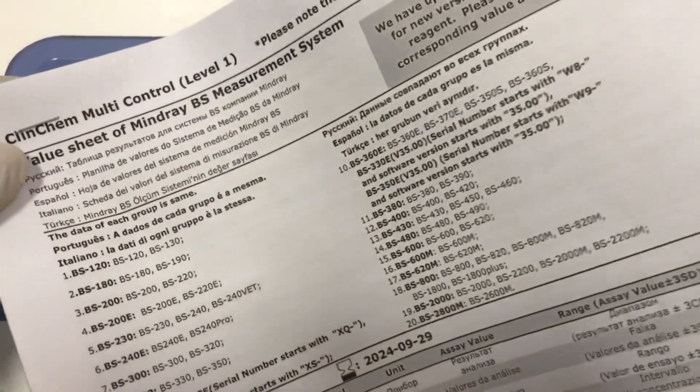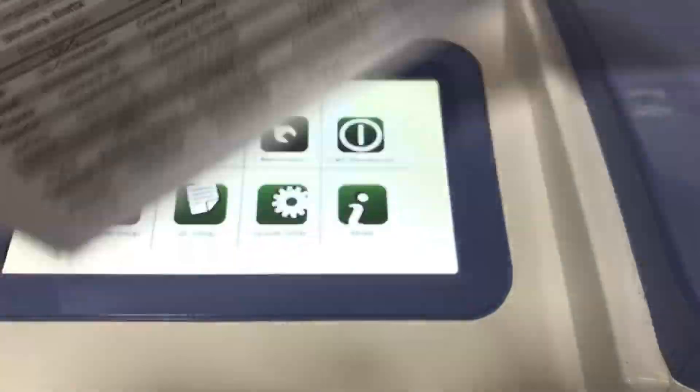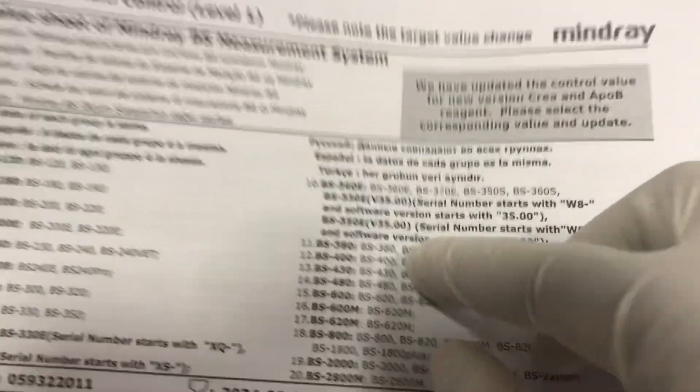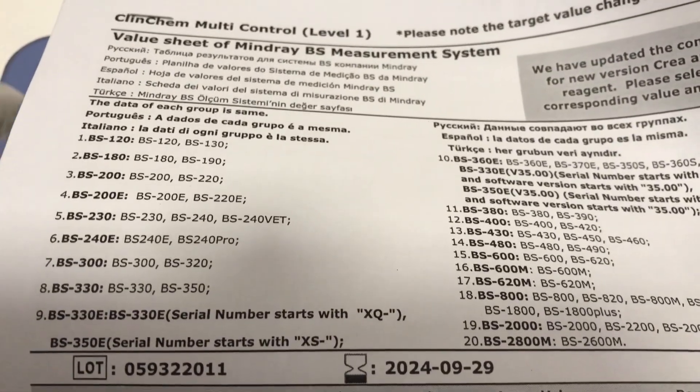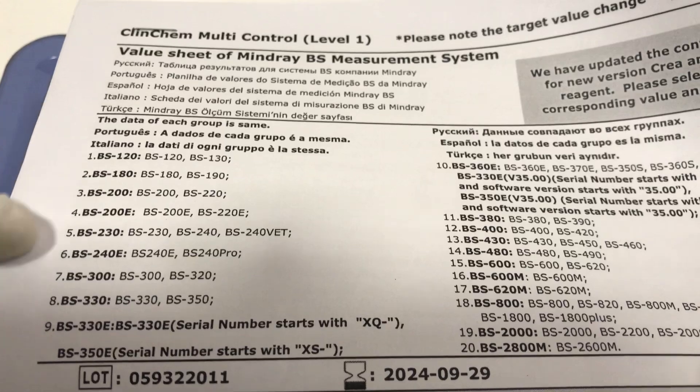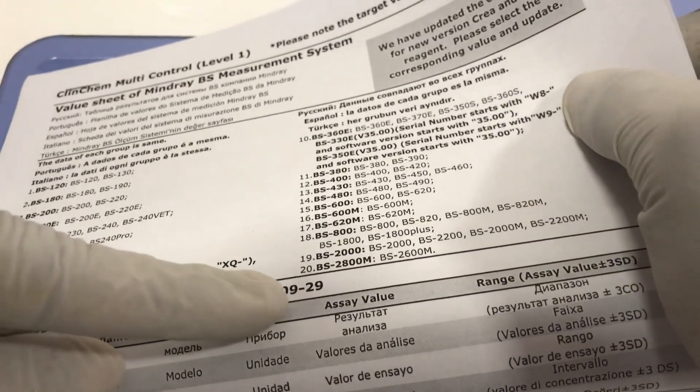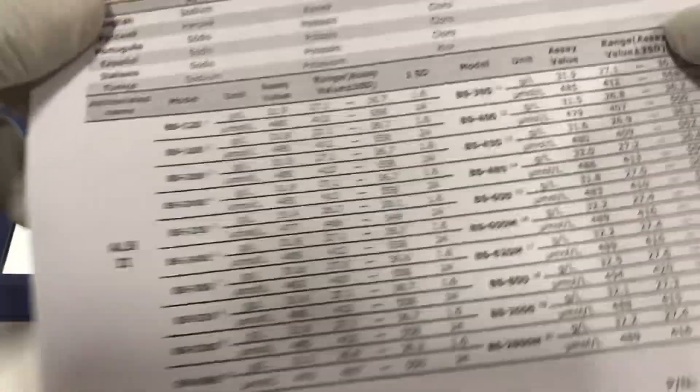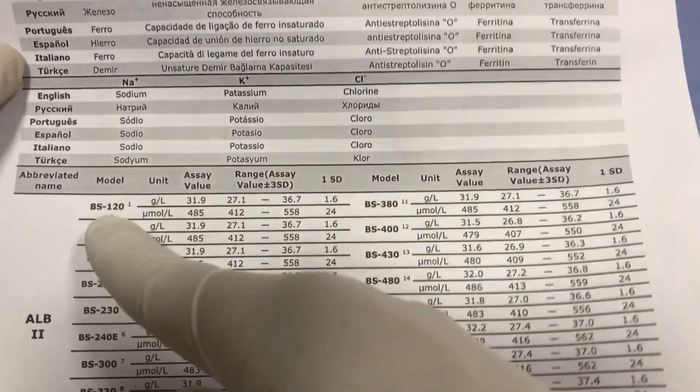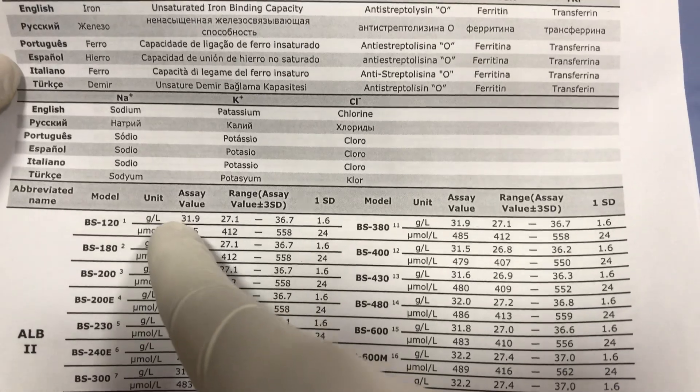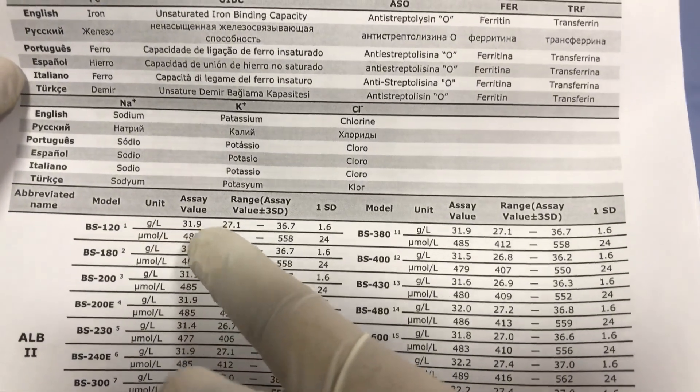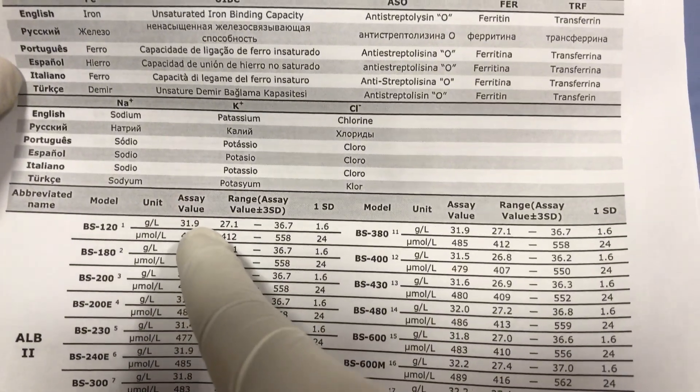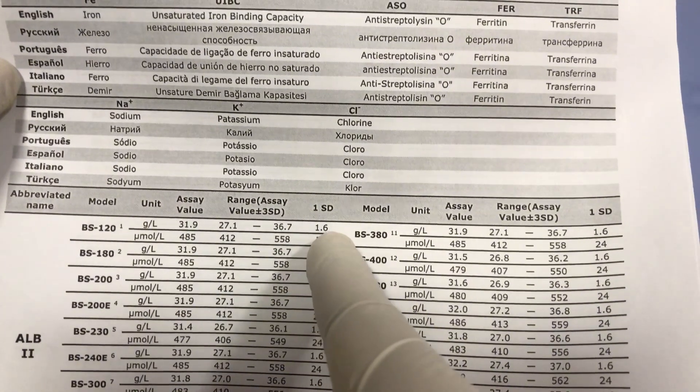This is one from Mindray. When you buy the reagent you can download this from online. It has all the models of the Mindray machine here. Number one is the BS-120, then it comes down to the most current one which is the BS-2800M. We have each of the analytes that you are going to use. Let me show you this is for albumin. BS-120 albumin in grams per liter - the expected value for this sample was 31.9 and then the standard deviation is 1.6.